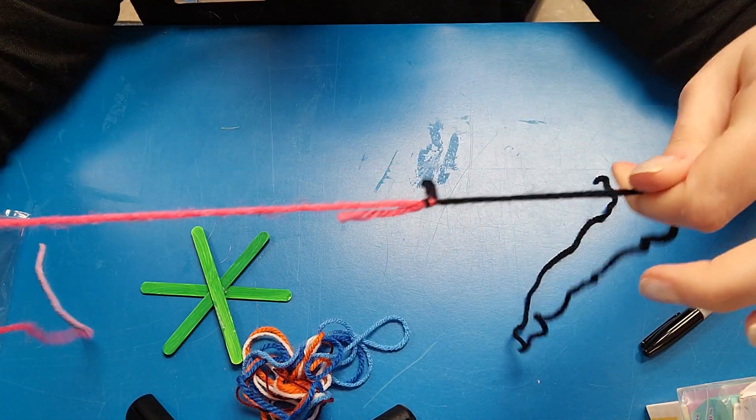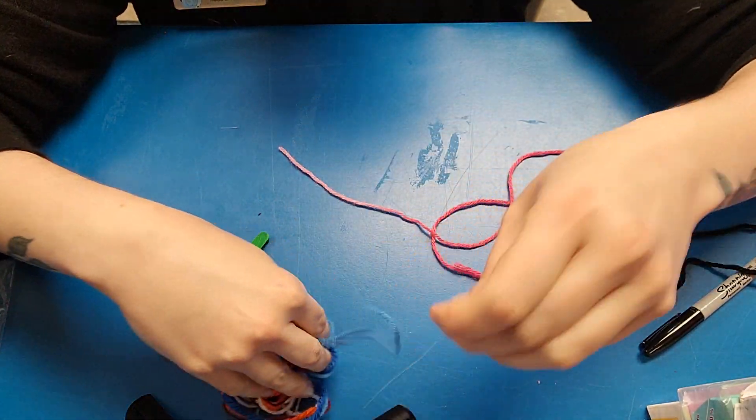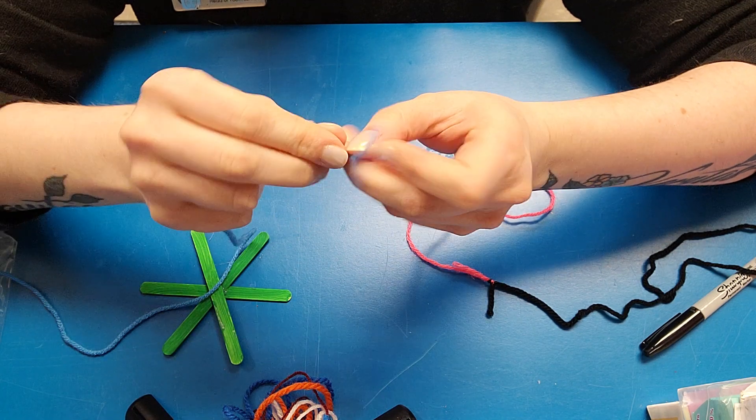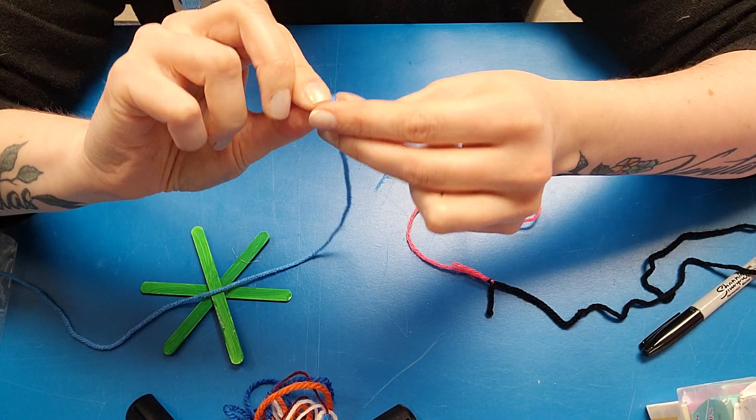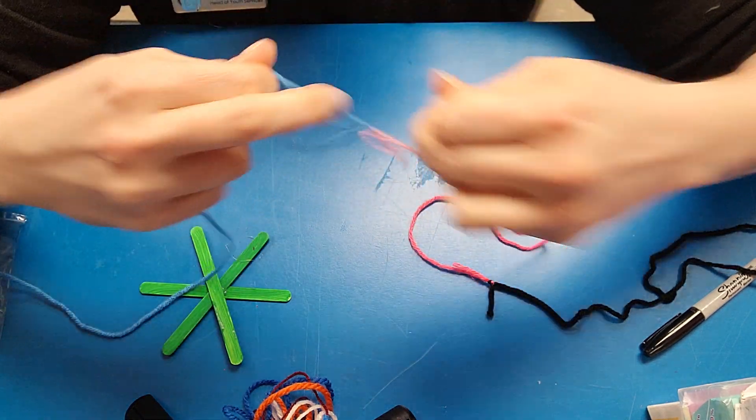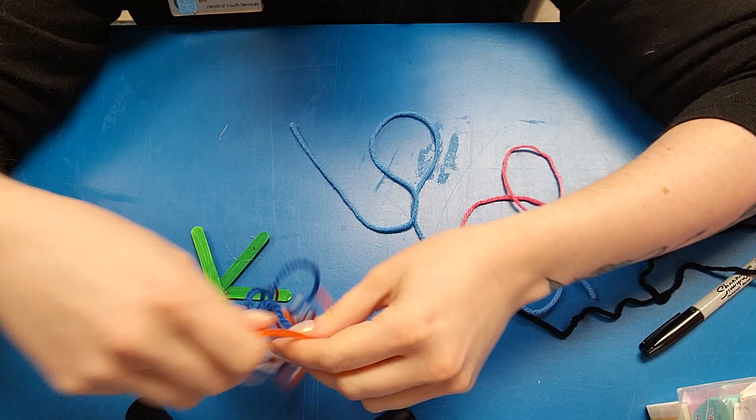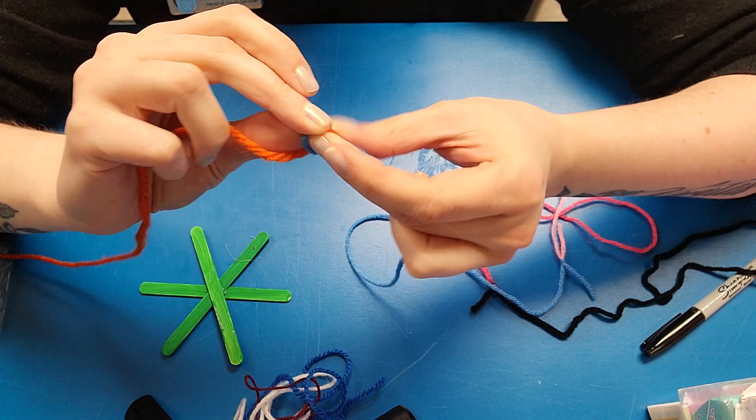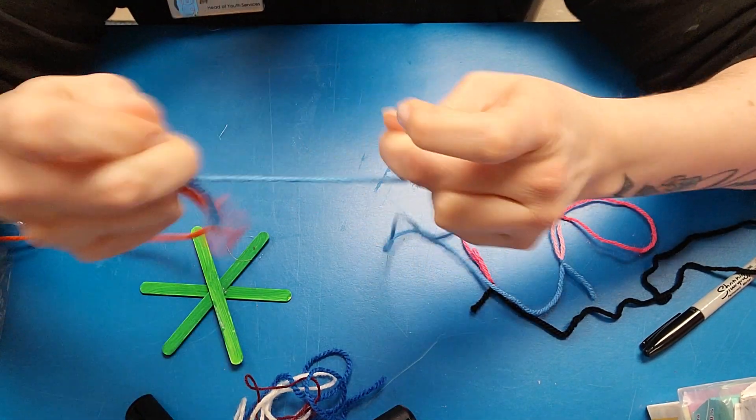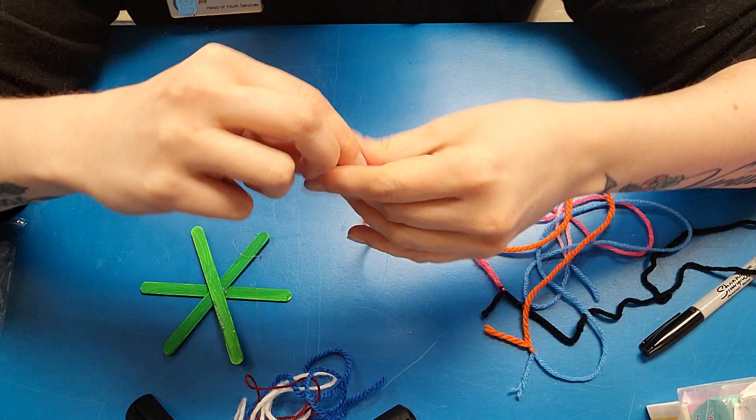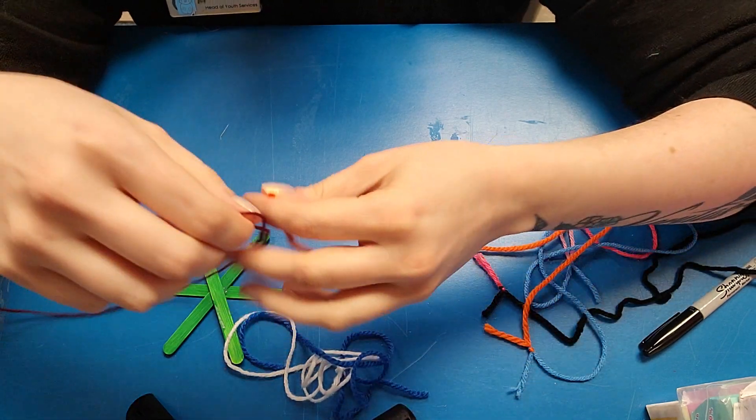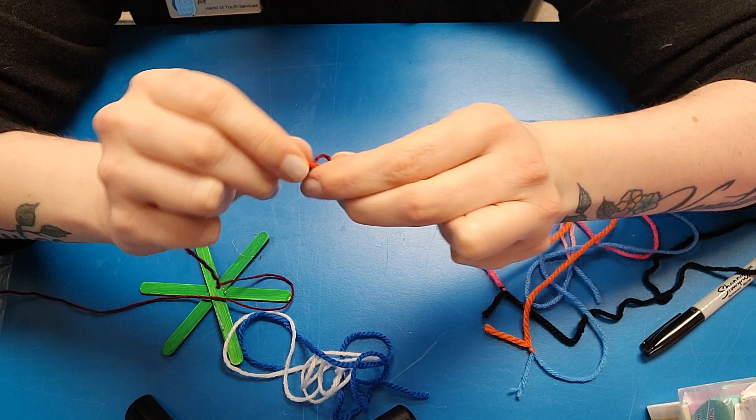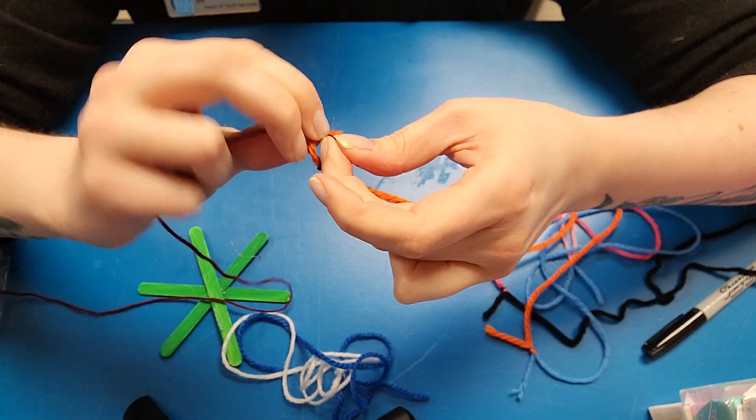We're going to start by knotting the yarn together and you can randomize the order or you can carefully select the order. It doesn't really matter. We just want to do it at the beginning because once you get the rhythm of twining the yarn around the turtle body, you're not going to want to stop and tie them as you go. And you want to make sure that the knots are secure enough that they are not going to untie as you put a little bit of tension on them, which is why I am tugging on the yarn as I knot it.